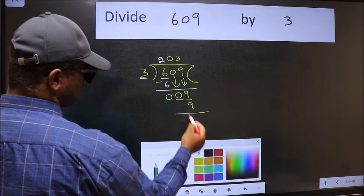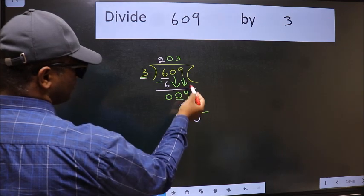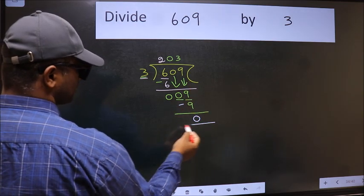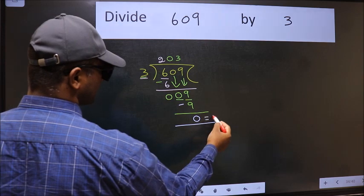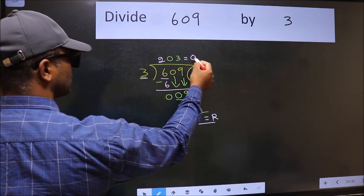Now we should subtract. We get 0. No more numbers to bring it down. So we stop here. This is our remainder and this is our quotient.